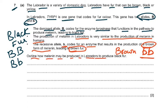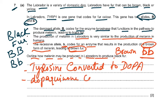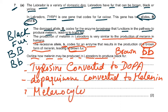Outline how melanin may be produced in Labradors to produce black fur. Because it said it is the same as humans, you know that tyrosine is converted to DOPA, or you can say DOPA quinone. And then DOPA quinone is converted to melanin. This takes place in the melanocytes. So two marks, two points — narrow mark scheme.